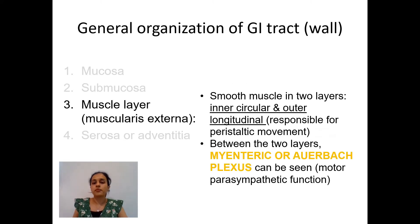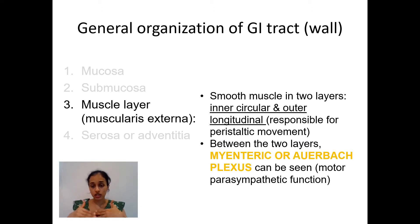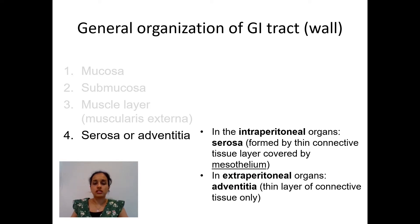The muscularis externa is a layer of smooth muscle generally arranged in two layers — inner circular and outer longitudinal — though at certain parts there may be more than two. Its function is to produce peristaltic movement, helping in movement of ingested food. Between the two layers lies another group of parasympathetic nerve plexuses called the myenteric plexus or Auerbach's plexus.